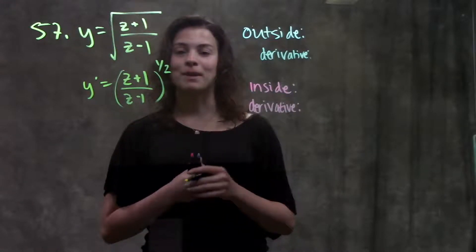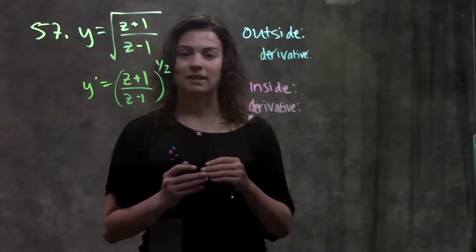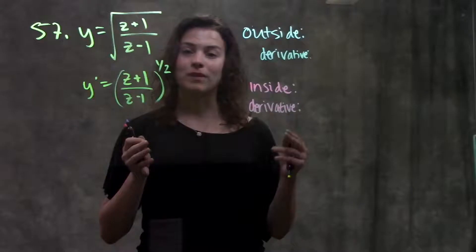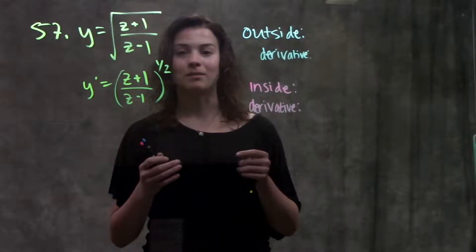Next, for chain rule problems, I'm going to first identify what my outside function is, what my inside function is. Because remember, chain rule tells us to start with the outermost function, take the derivative of that, and then multiply it by the derivative of the innermost function.